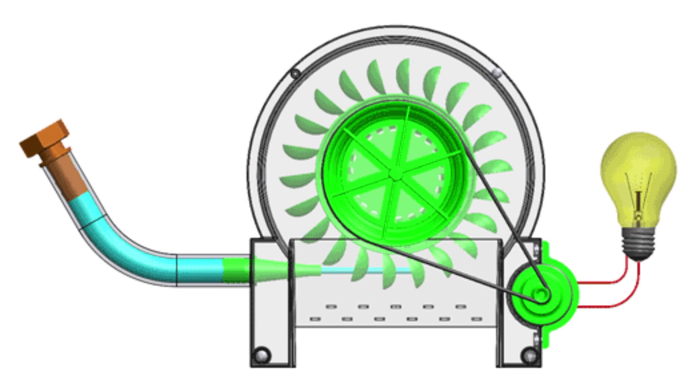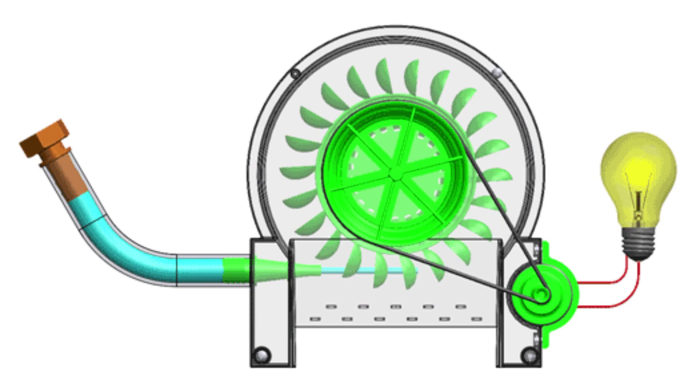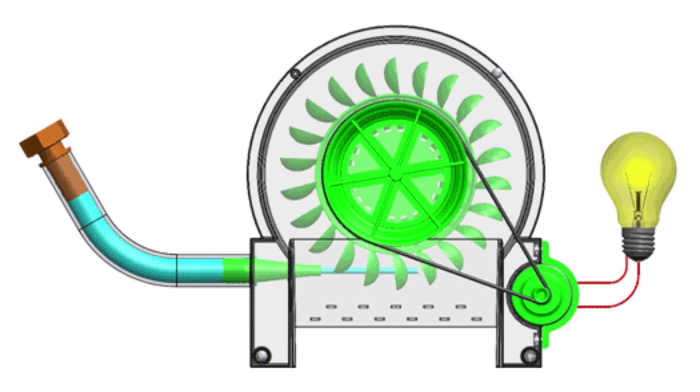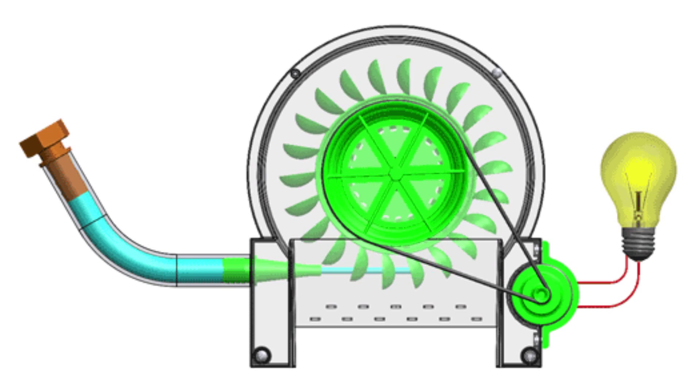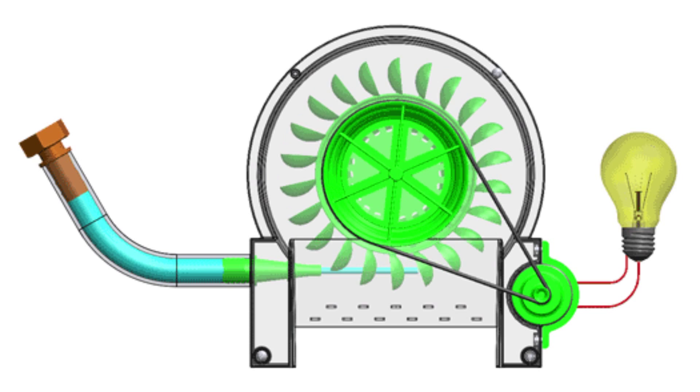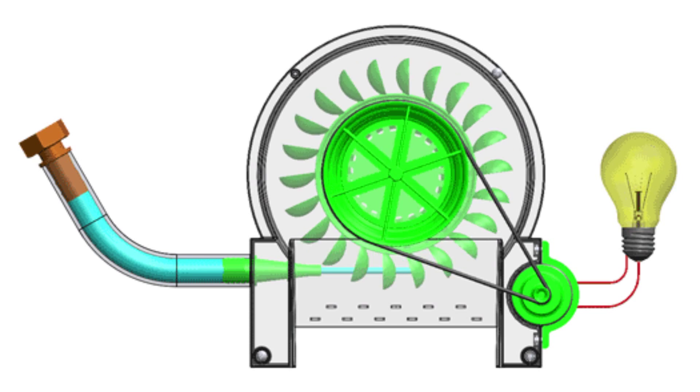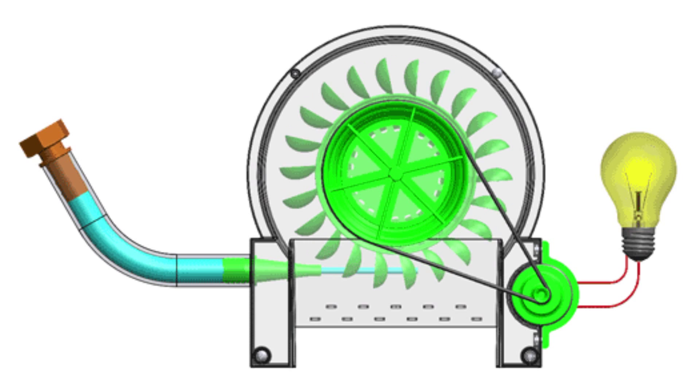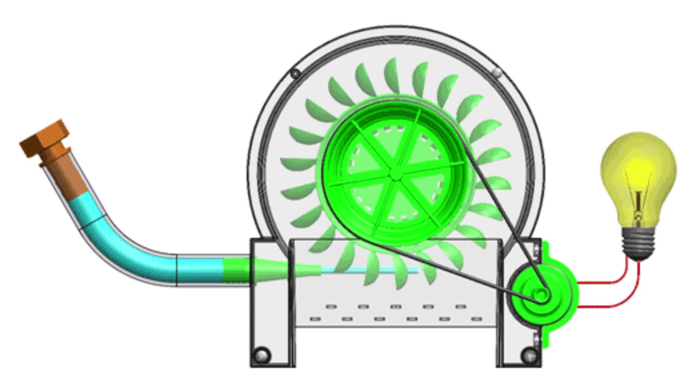In our next example, we have water coming in, which is our current. The water being pushed down the hose is our pressure or our voltage. The nozzle on our water wheel would give us a little resistance and the work actually being done, the water pushing against the water wheel, would be our power. Or in the case of electronics, watts. This is also a very good example of how a hydroelectric dam works.